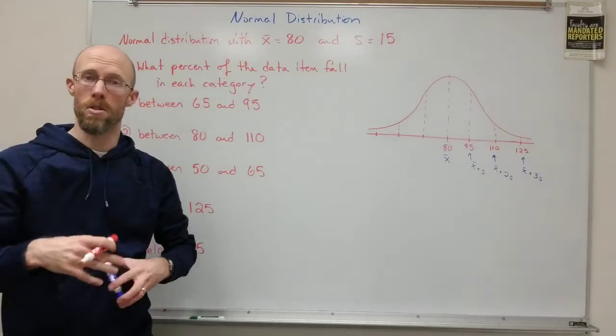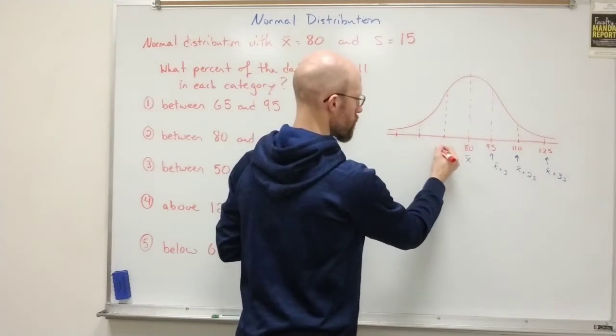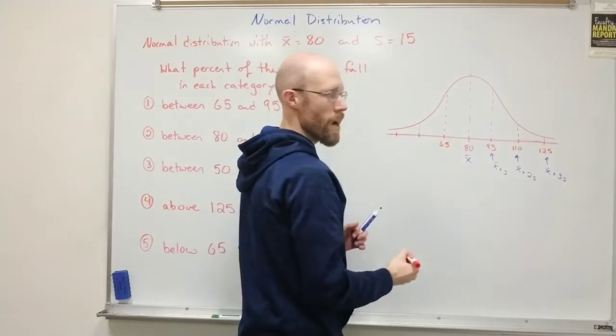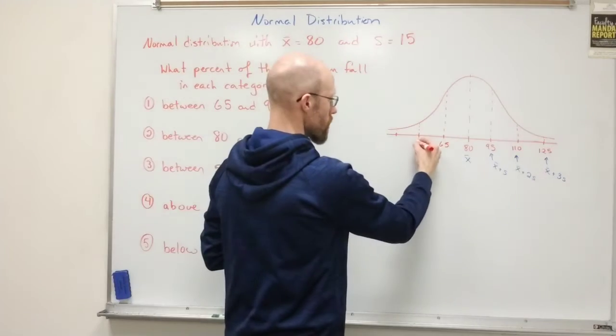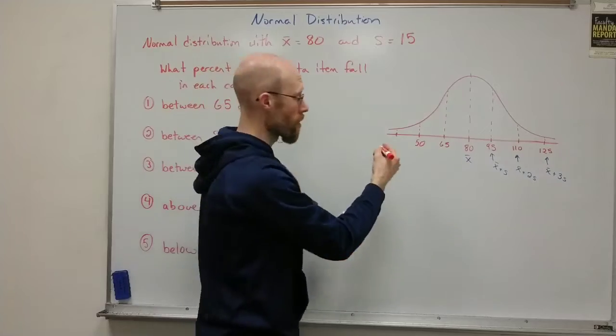And going the other way, if I were to subtract off standard deviations, the first one would be 80 minus 15, which is 65, and then subtract another 15 to get 50, and then subtract off another 15 to get 35.